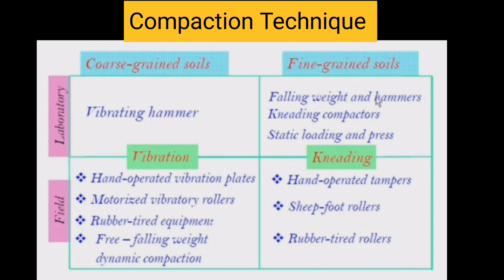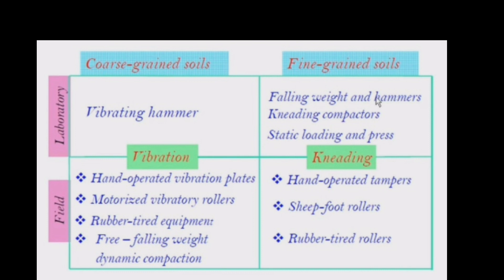In this table, different compaction techniques — both laboratory and field methods — are summarized for coarse-grained and fine-grained soils. For coarse-grained soil, the laboratory technique is a vibrating hammer; in the field, it is compacted by hand-operated vibration plates, motorized vibratory rollers, rubber-tired equipment, and free-falling weight dynamic compaction. For fine-grained soil, laboratory methods include falling weight and hammer, kneading compactor, static loading, and press. In the field, fine-grained soil is compacted using hand-operated tampers, sheepsfoot rollers, and rubber-tired rollers.